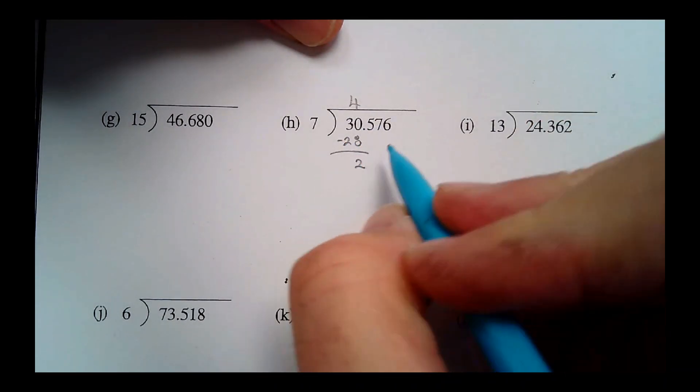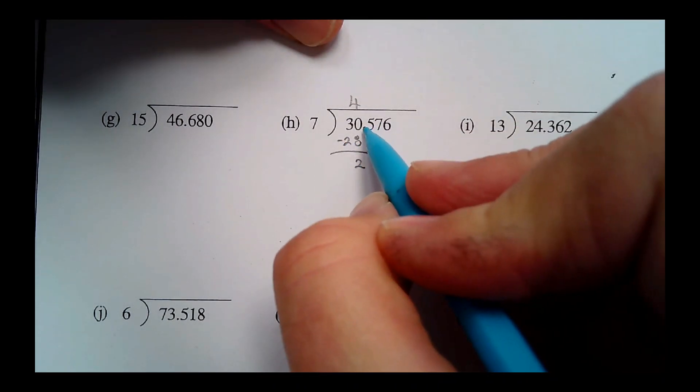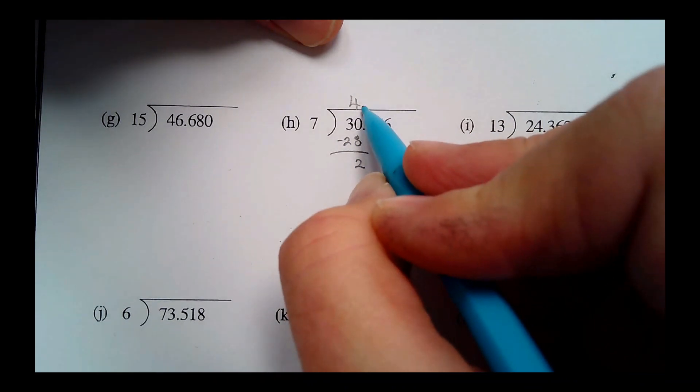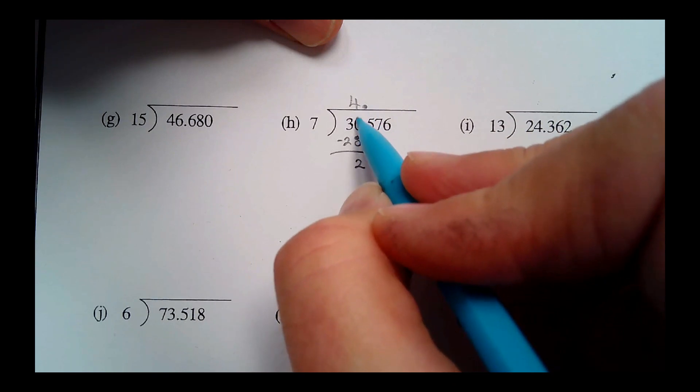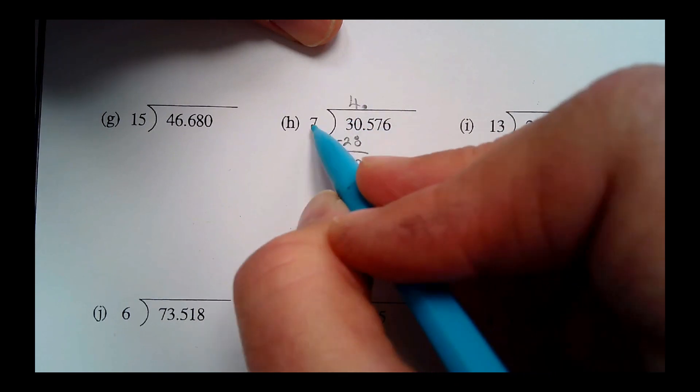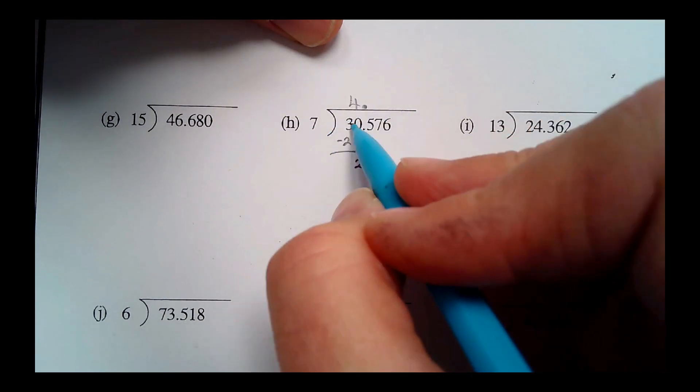So twenty-eight from thirty is two left over. And what do we do with this decimal? It goes straight up. Remember that. And keep these things lined up. That four goes over the zero here because it's seven into thirty, it's not seven into three.